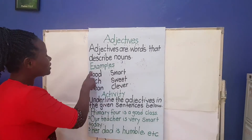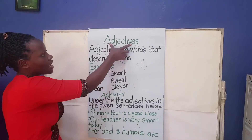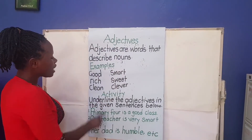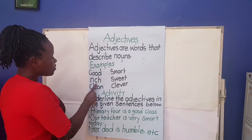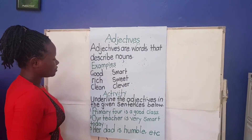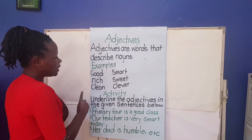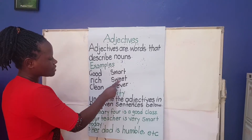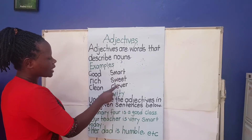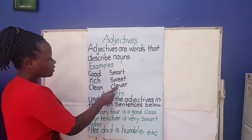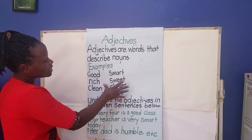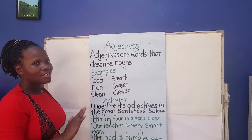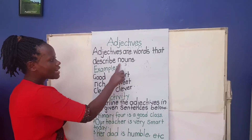Let us look at the examples of adjectives. We have: good, rich, clean, smart, sweet, clever. So these are examples of adjectives that can describe a noun.